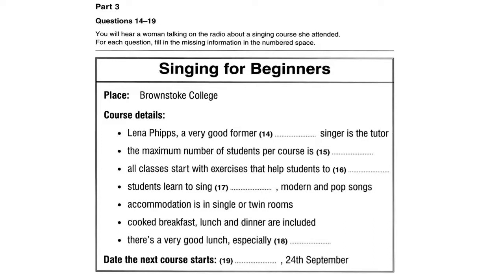During the three days, students learn around twenty songs in a variety of different styles, depending on the interests of the class. There are classical and modern songs, including pop songs. By the last day, everyone was confident enough to perform their favourite song on their own. I would really recommend this course. Brownstoke College is an old building surrounded by a beautiful garden. Accommodation is very comfortable — the single and twin rooms are clean and warm, and three meals a day are included in the cost: a cooked breakfast, lunch, and an evening meal. The salads can be recommended. Courses begin on the last Tuesday of the month, so the next one begins on the 24th of September and continues until Thursday the 26th of September. I would advise you to reserve a place early, because it's certain to be very popular.